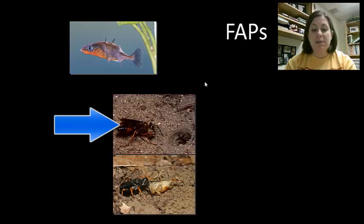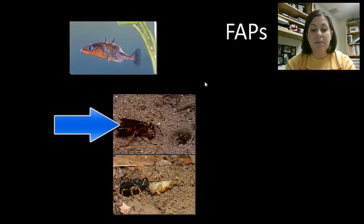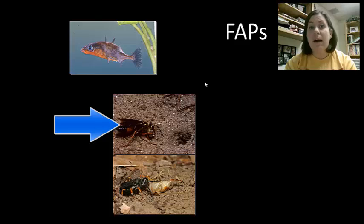Another example are the digger wasps. Digger wasps drop a paralyzed insect near the opening of their nest. Before taking their provisions into the nest, the wasp first has to go inspect the nest, leaving the prey outside. During this inspection, a scientist can move the prey a few inches away. When the wasp emerges ready to drag the prey inside, it finds the prey is missing, quickly locates it again, but instead of taking it directly into its burrow, it drops the prey outside and inspects its nest again — even though it just did it. It has to inspect the nest before it can bring the prey in, every single time.